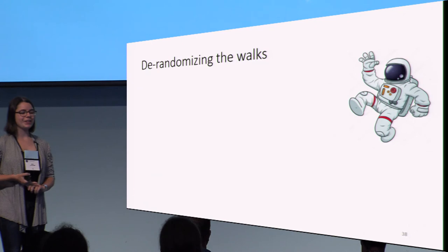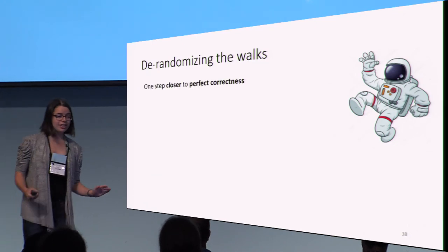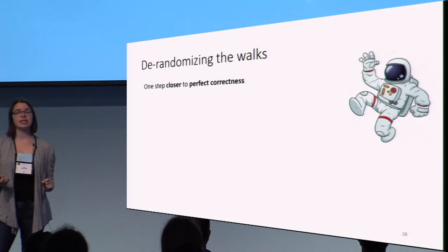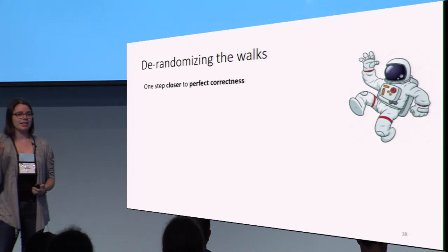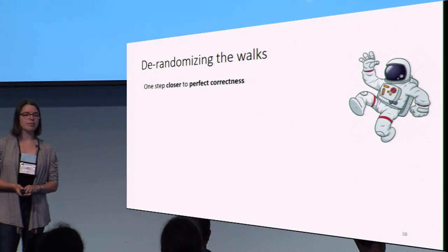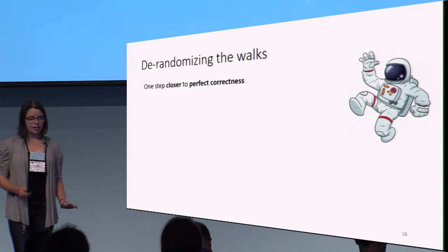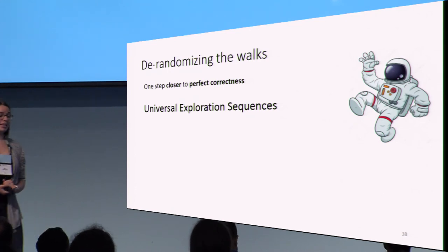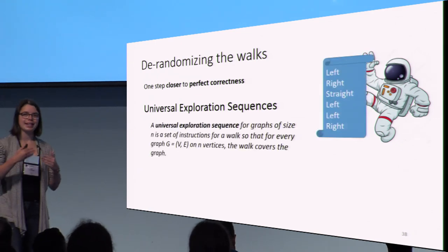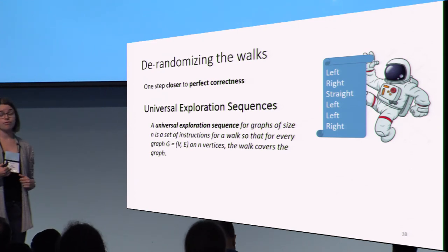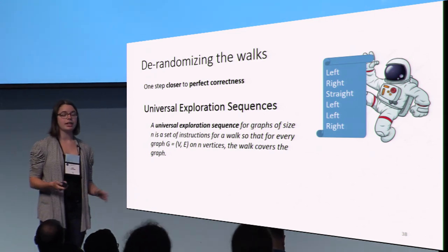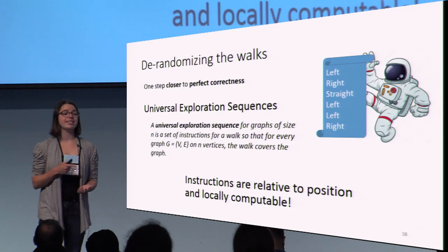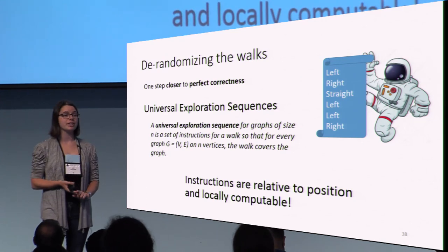One more note: we can de-randomize the walks. This is interesting because it brings us one step closer to getting a perfectly correct topology-hiding algorithm. I say one step because unfortunately we still have negligible error in the homomorphically secure encryption scheme — ElGamal has a negligible probability of failing. We use something called a universal exploration sequence to de-randomize these walks. A universal exploration sequence is, for graphs of size n, a set of instructions such that if you follow them for a walk, you're guaranteed to hit every node in any graph of size n. The best part is these walks are relative to position and locally computable, so every node in the graph can compute the same universal exploration sequence.